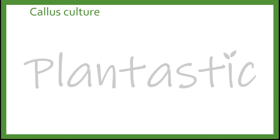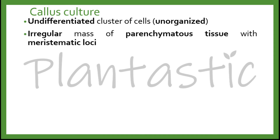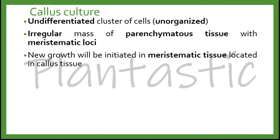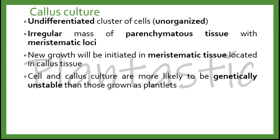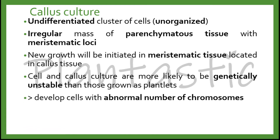Callous Culture is an undifferentiated cluster of cells which is unorganized. It has an irregular mass of parenchymatose tissues with meristematic loci. The new growth will be initiated in meristematic tissues located in callous tissue. Cells in callous culture are more likely to be genetically unstable than those grown as plant-level micropropagation, because it will develop cells with an abnormal number of chromosomes.